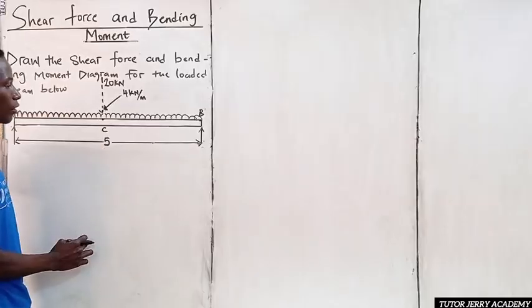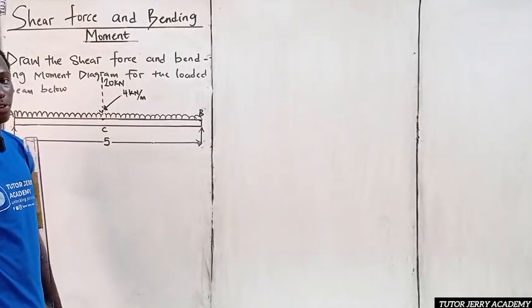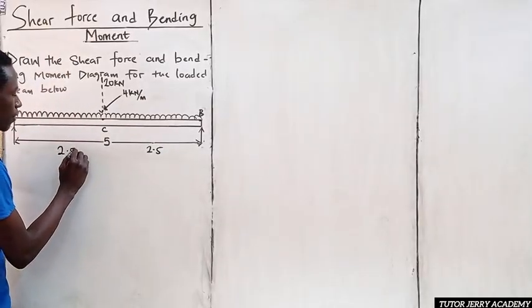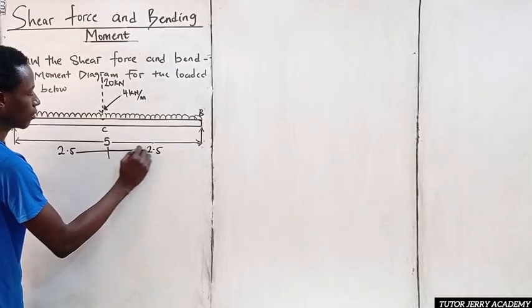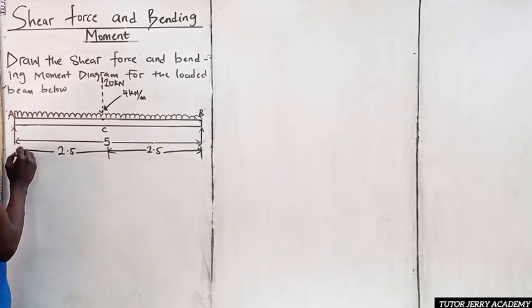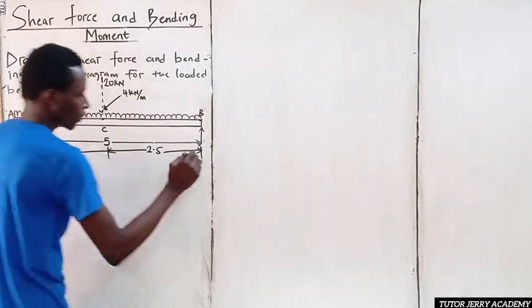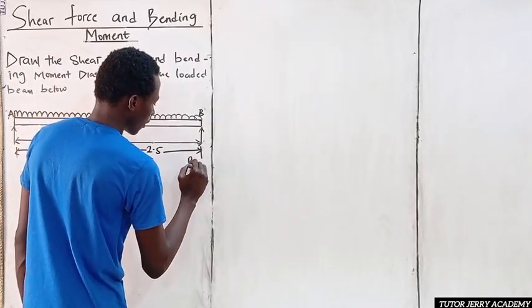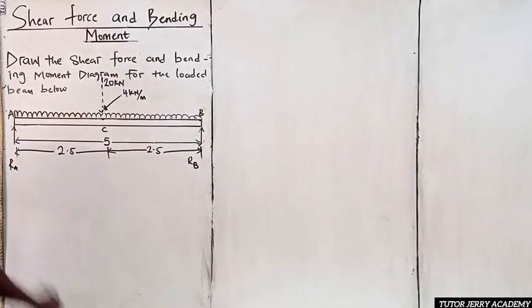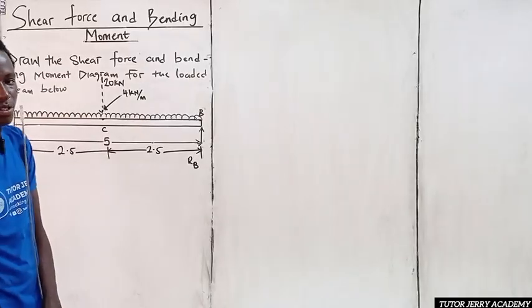Since this is the center of the beam, the distance from each end to the center will be half of five. So from B to C is 2.5 and from C to A is also 2.5. This is our support at A, and we will have reactions Ra and Rb.